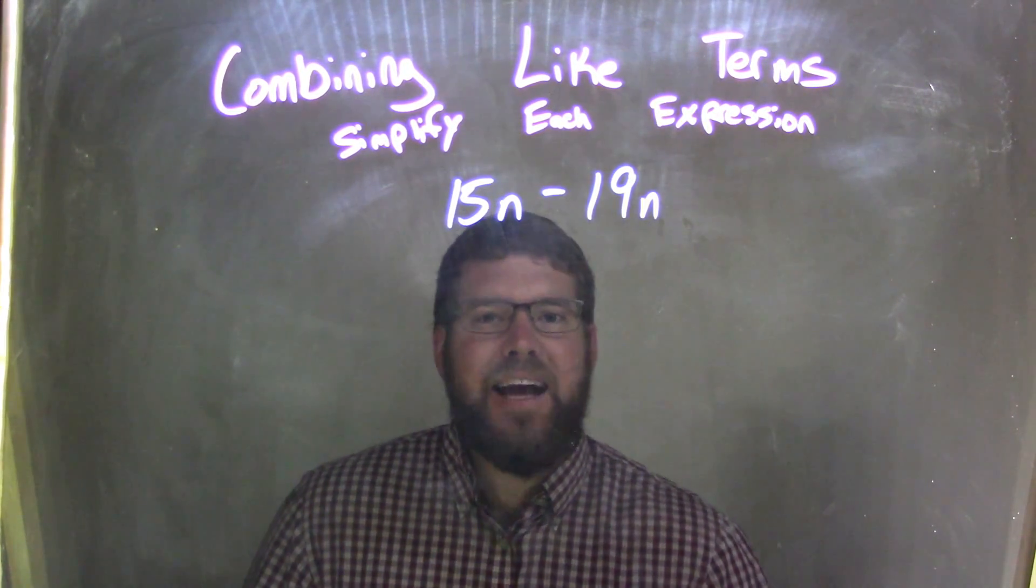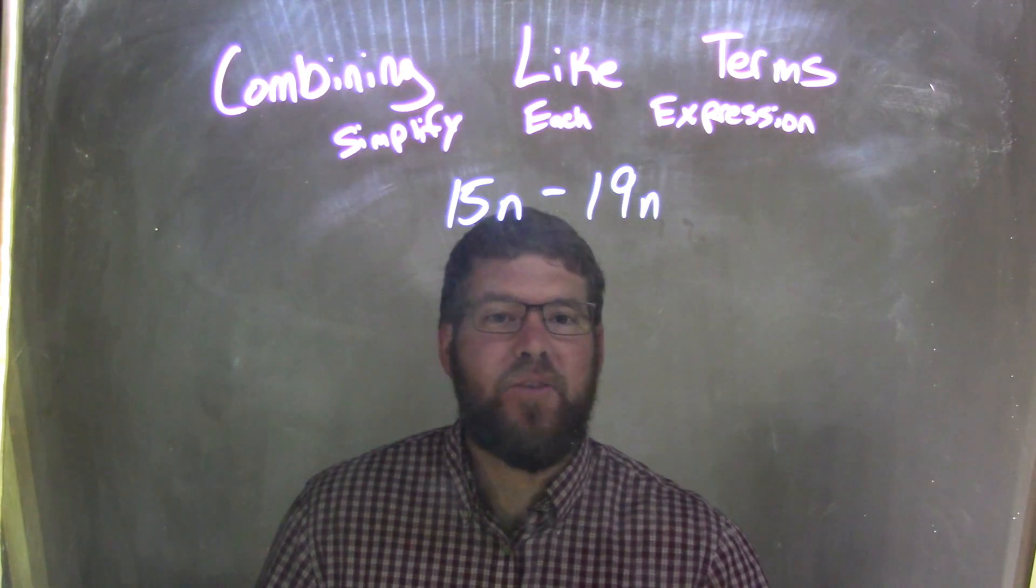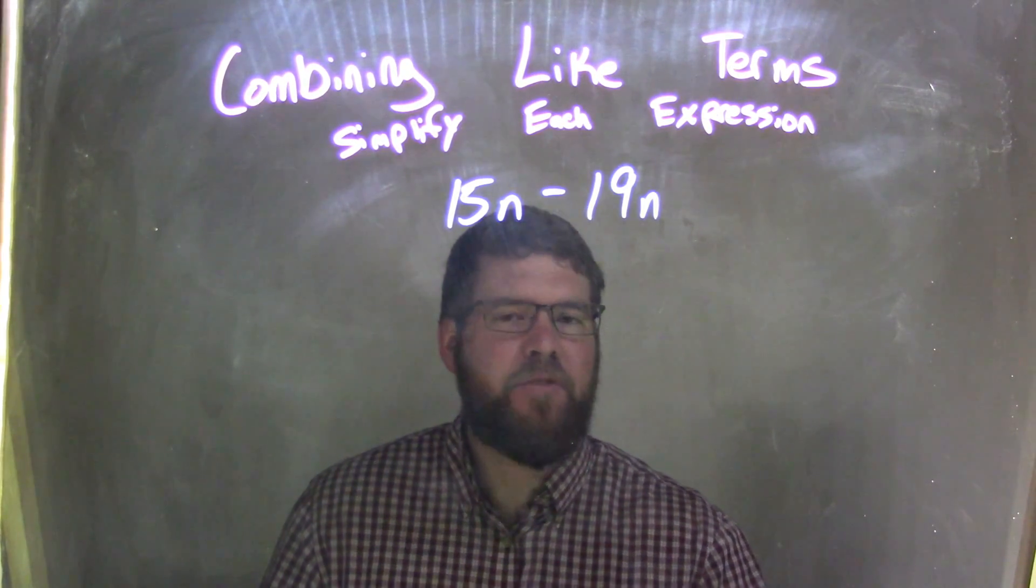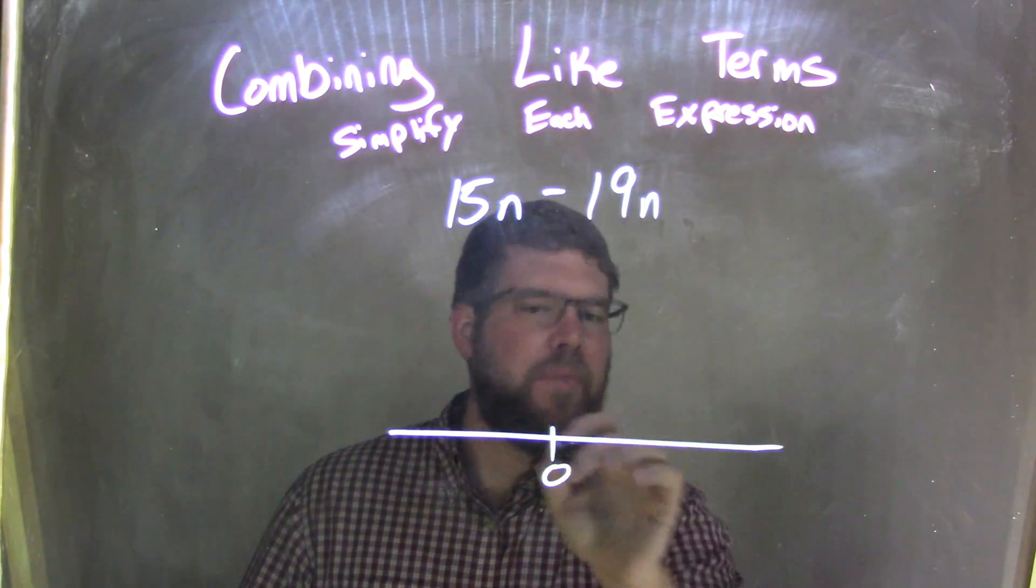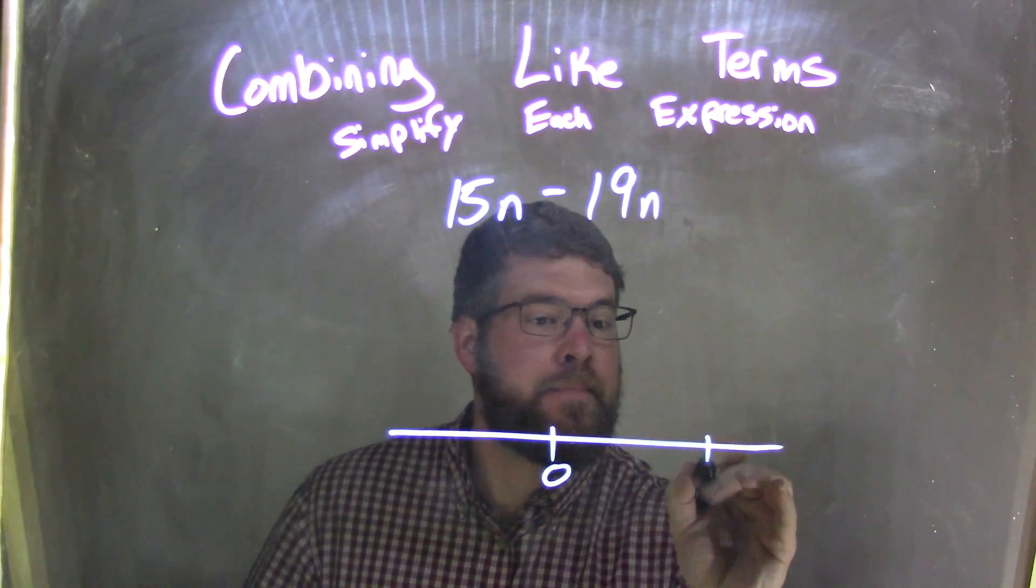Well, subtracting the 19, I know that's larger than the 15, so I know my answer is going to be negative. So let's look at the number line here. I like to do an adaptive number line, not every single tick mark—that takes a lot of time and space.